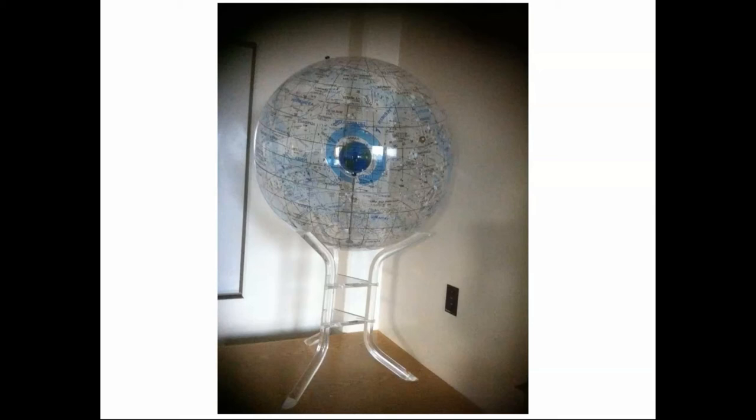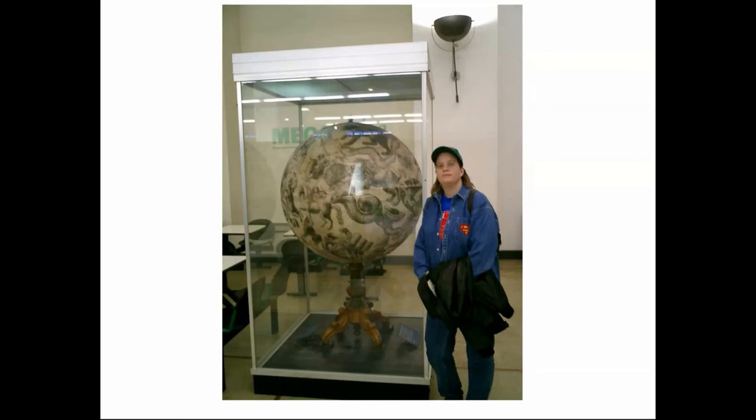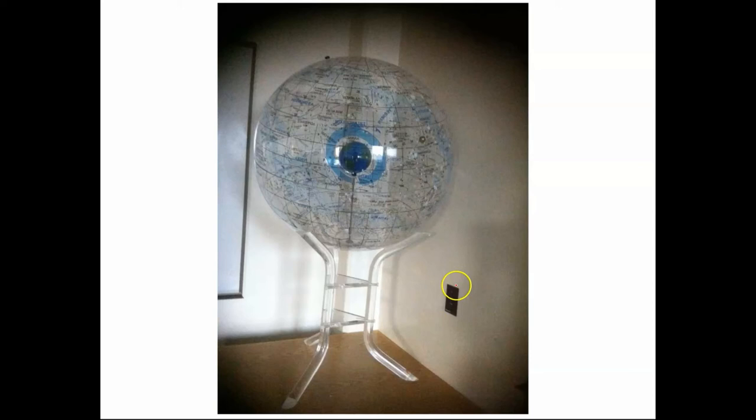So, the Department Head went to get some course catalogues to compare the topics that were covered on campus in the astronomy class. And while he left the room, I look over the corner and I see this wonderful celestial sphere here. To give you a sense of scale, this is a standard outlet for electricity there in the wall.